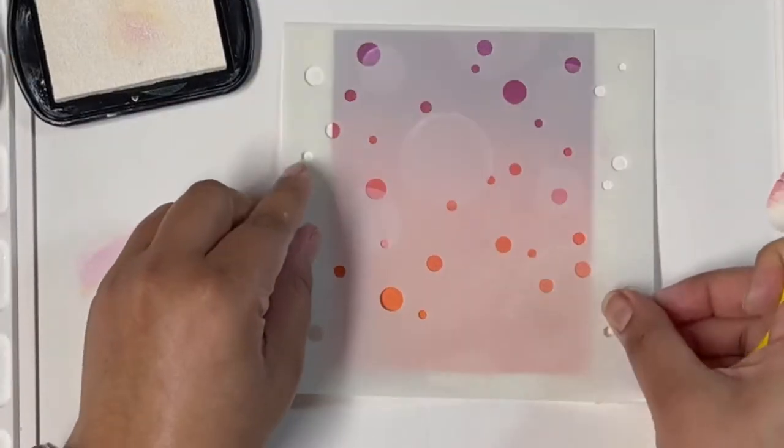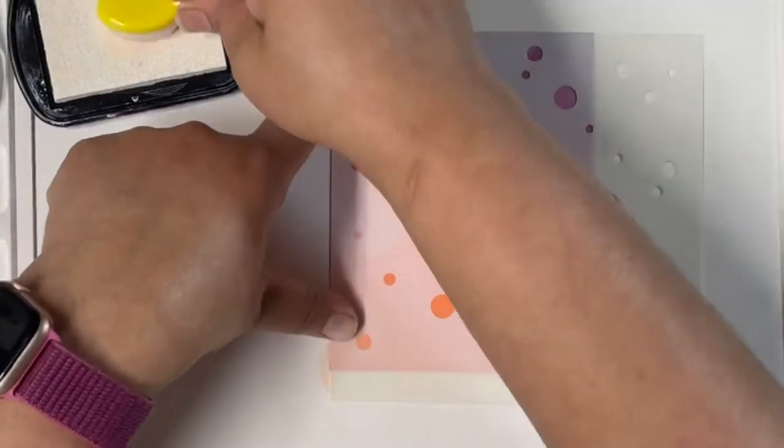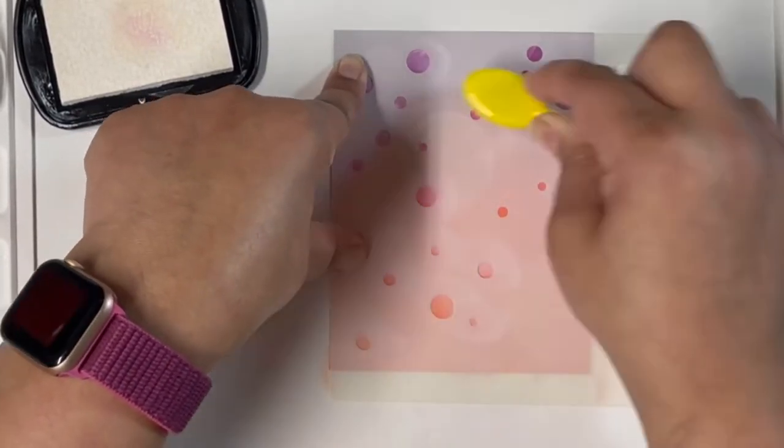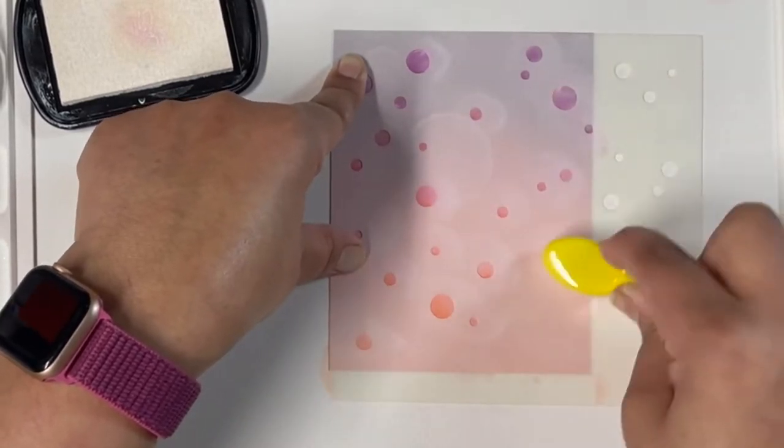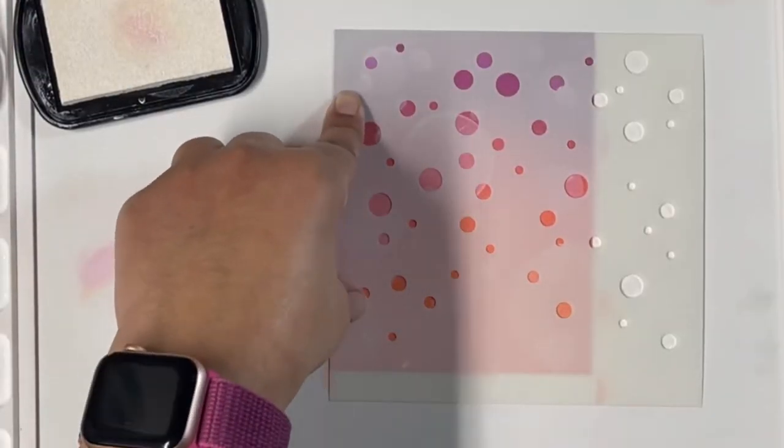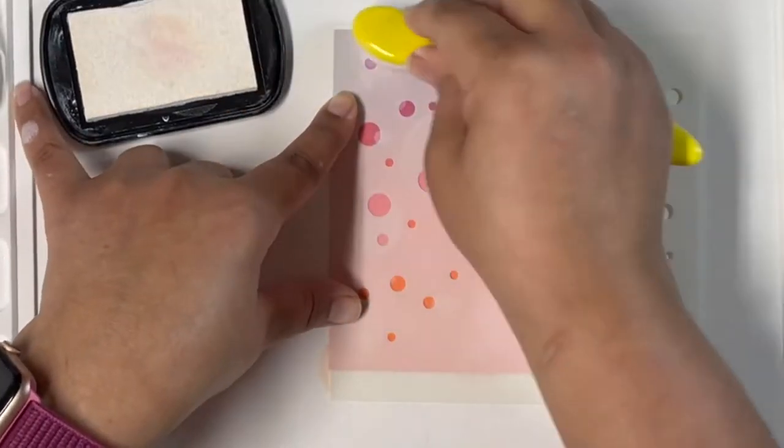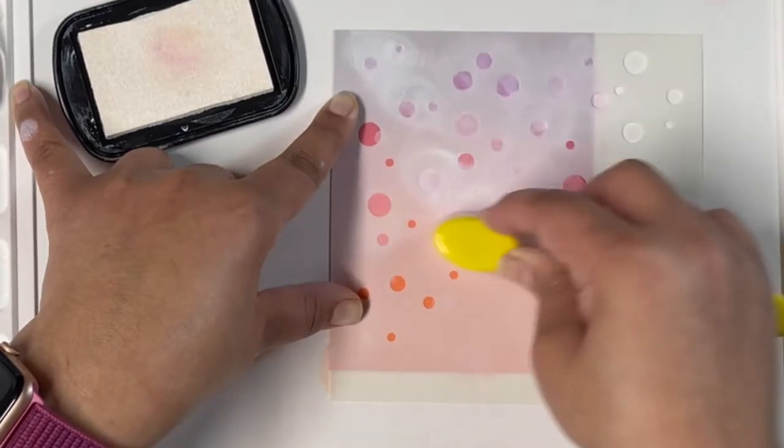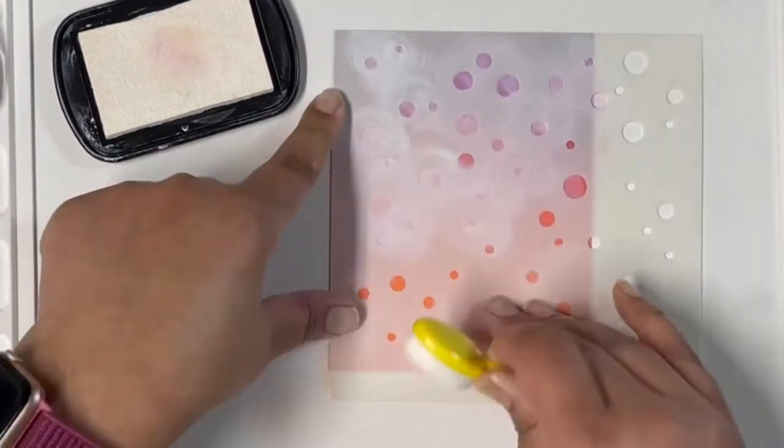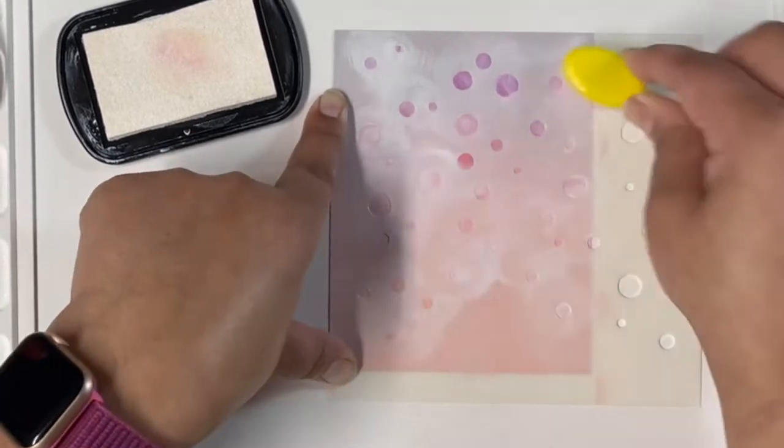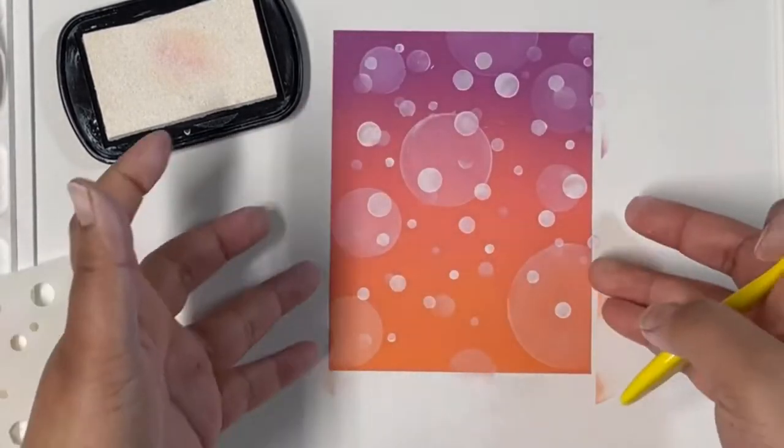Next, I'll use one of the stencils from the Bubble Background Stencil, this time going a little heavy-handed. Just remember, pigment inks take time to dry, so make sure you're not moving the stencil a lot or you might smudge those white circles. Lastly, using the second stencil from the pack, inking up the circles heavy-handedly to get three beautiful layers of stenciling that create the bokeh effect.